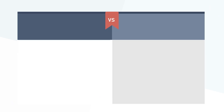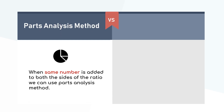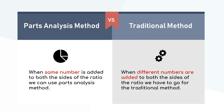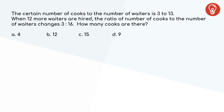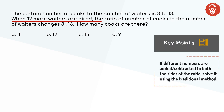So far, in the questions we have solved, the same number is added to both sides of a ratio. But sometimes questions are given where the same number is not added to both sides of a ratio. We cannot use the path analysis method in that case. We rather go for the traditional approach or for option elimination. In this question, only the waiters' count is increased — the cooks' count is not increased by the same number. Hence we are going for the traditional method because a different number is added to both sides of the ratio.